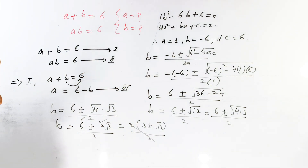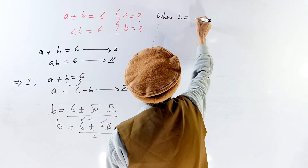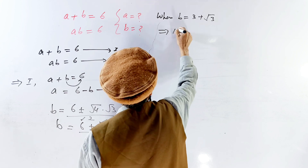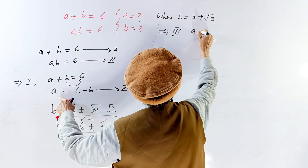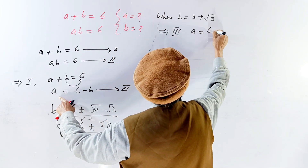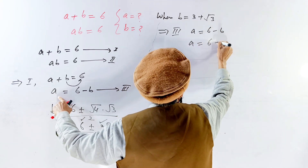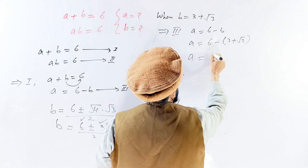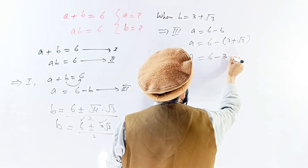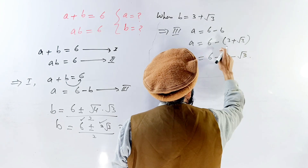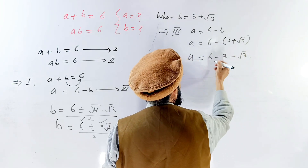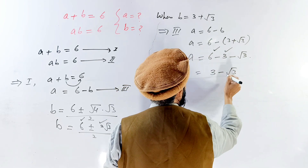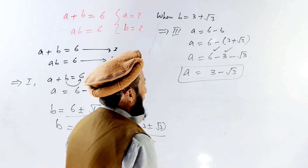When we take the positive case, B is equal to 3 plus root 3. Then from equation number three, A is equal to 6 minus B, so A equals 6 minus the quantity 3 plus root 3. This simplifies to 6 minus 3 minus root 3, which gives A is equal to 3 minus root 3.